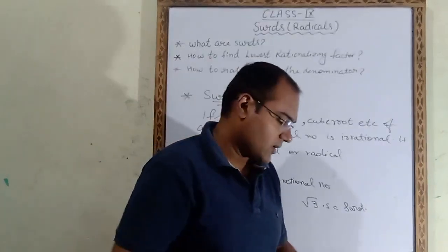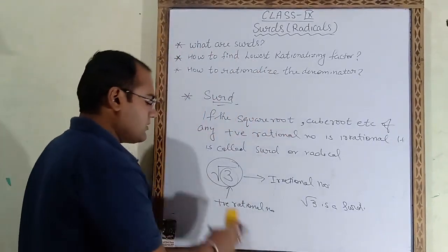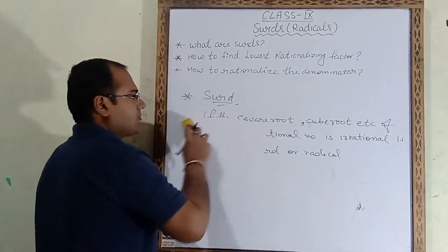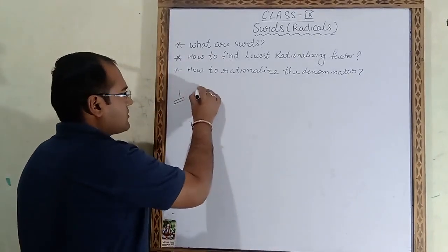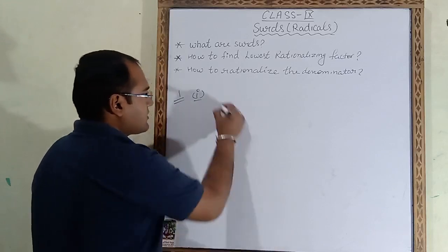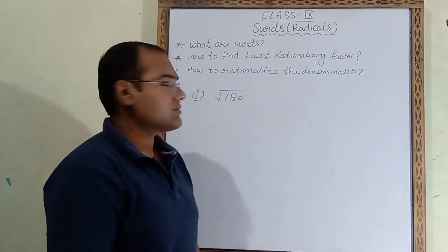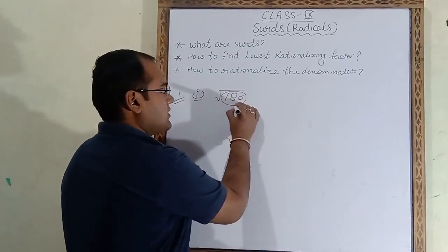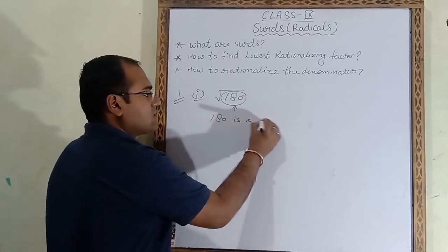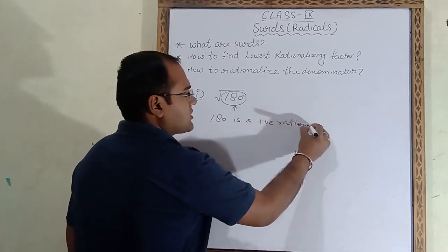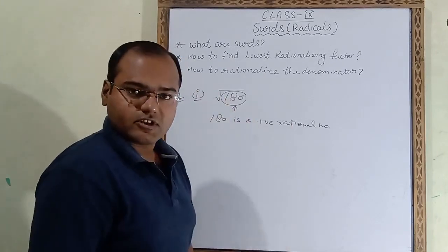Now we will solve some questions based on this topic. See question number 1 of your textbook, Exercise 1. In question number 1, first part: square root of 180. First of all, we have to check whether 180 is a positive rational number or not. So first of all, 180 is a positive rational number.